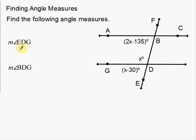Let's do another example. This one kind of goes the same way, so I'm going to go a little bit faster. Notice that I have two parallel lines — AC and GD are parallel. Let me write in the parallel symbols right here. Okay, those are parallel. So now I want to solve for EDG and BDG, and I'm just going to worry about one at a time.